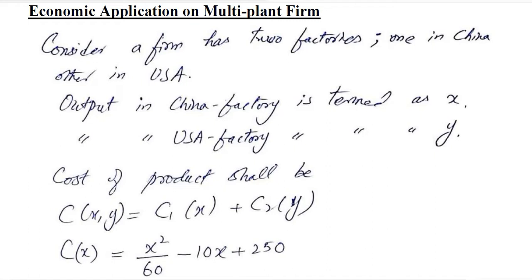Optimization can help us maximize the profit of a firm that has more than one plant. Let's consider this example in which a firm has two factories, one in China and the other in the USA.